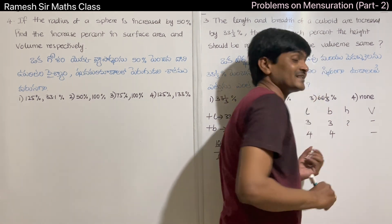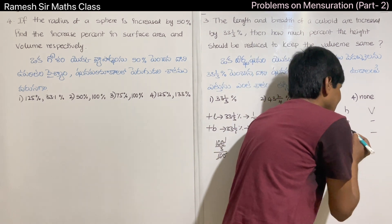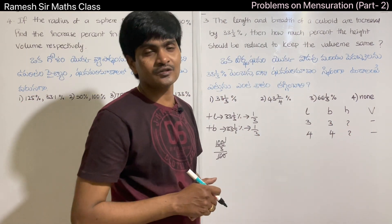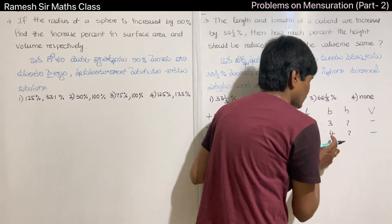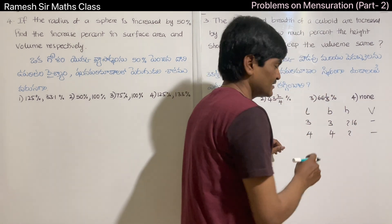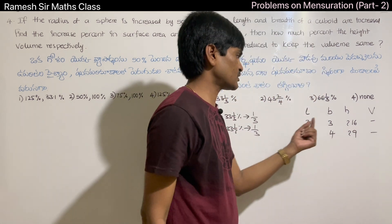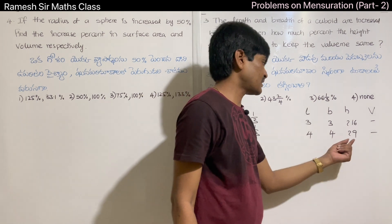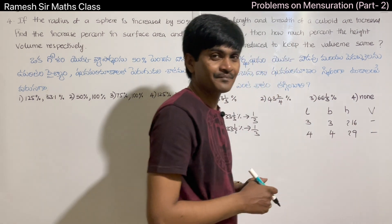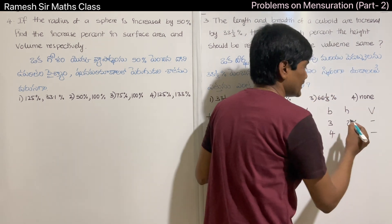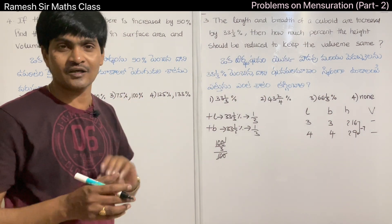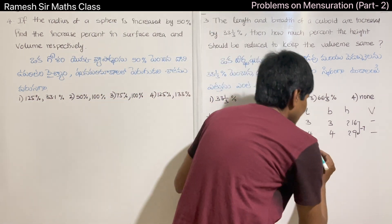We multiply the volume using the L×B×H formula. The new L×B is 4×4 = 16. The original L×B is 3×3 = 9. So the new height must satisfy: 16×(new height) = 9×(original height). That gives us the height ratio as 9/16, meaning a decrease of 7 units from 16.